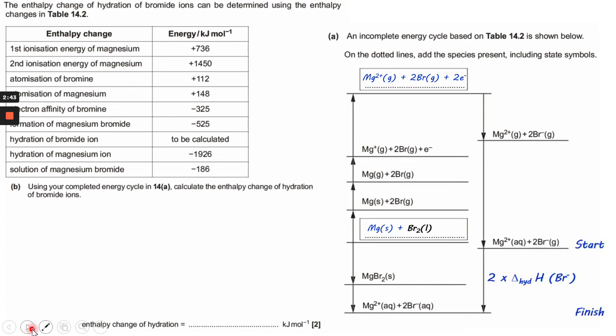So bear in mind that it's two Br- there and two Br- there, so we'll have to think about dividing something in half eventually to isolate just the hydration enthalpy of bromide ion.